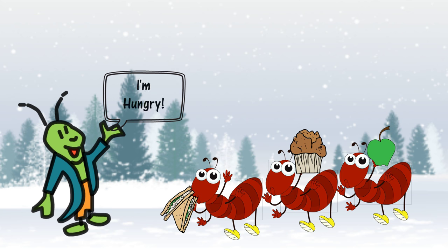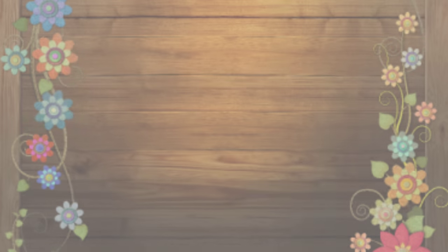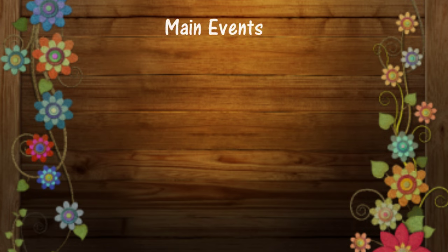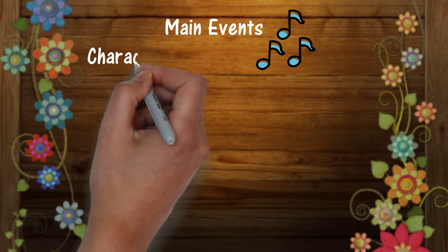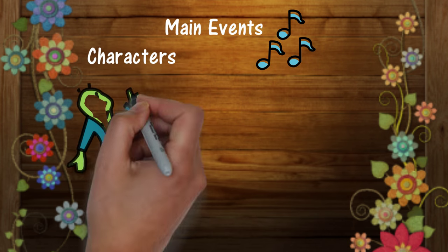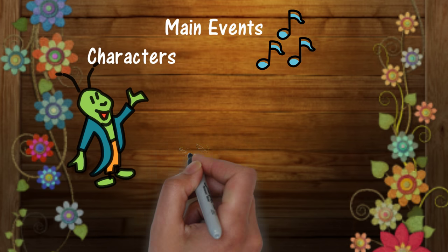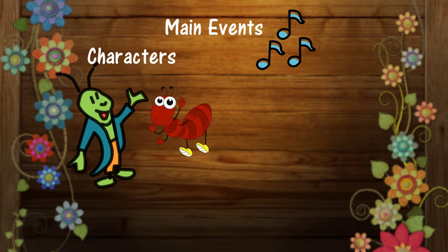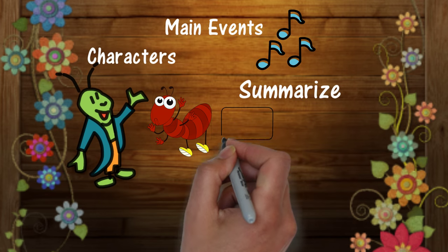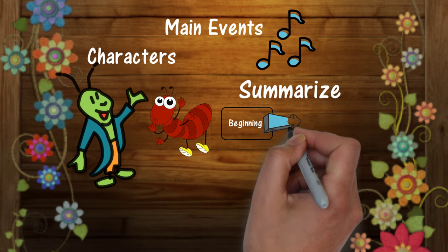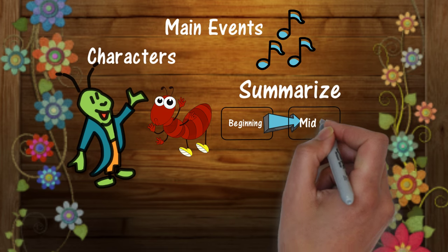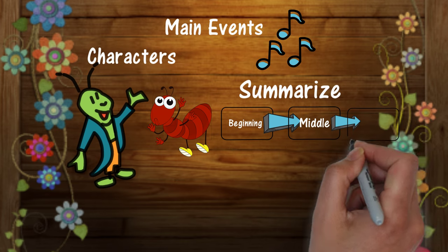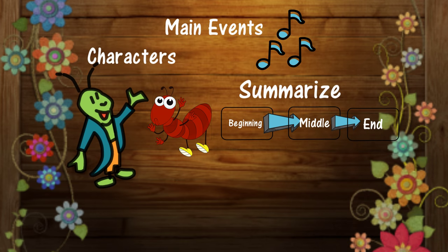In order to retell this story, you must first look at the main events that happened. Include the characters and summarize the beginning, middle, and end. The Grasshopper and the Ants was about a grasshopper who loved to have a good time and never showed much interest in working. While the grasshopper was playing around, the ants were planning ahead. Winter came and the ants had stored up enough food to last the entire winter, while the grasshopper had nothing. Although the grasshopper asked the ants for food, there wasn't enough to share. The grasshopper may have learned a lesson to simply plan ahead.